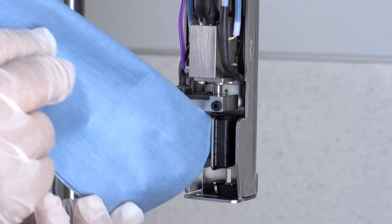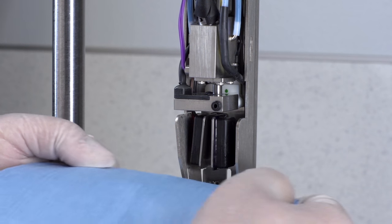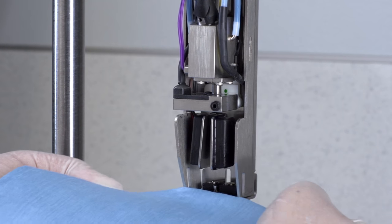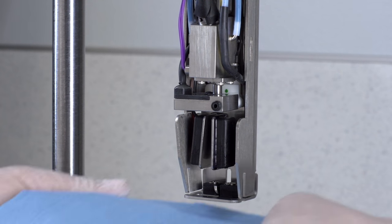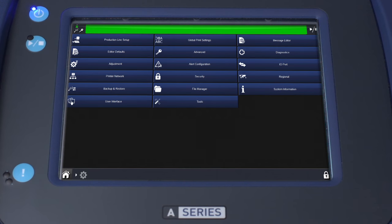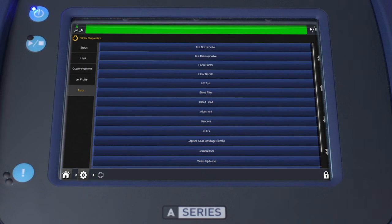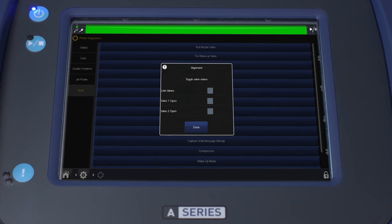This is an important step before proceeding with the alignment. Again from the front panel, select the Settings button, then Diagnostics, followed by Test on the lower left-hand side of the screen. Select Alignment, then select the checkmark to start the jet.